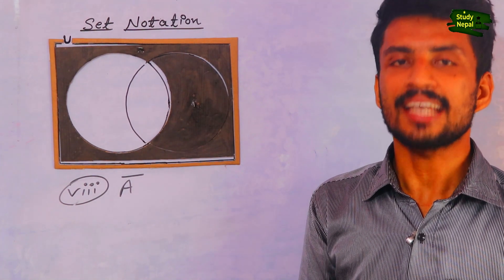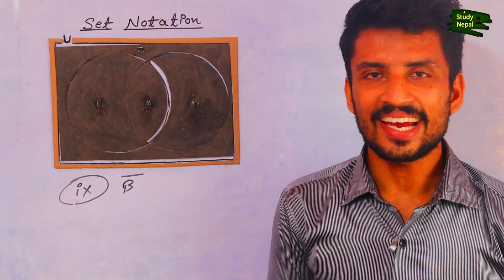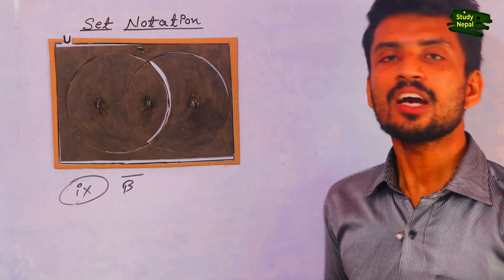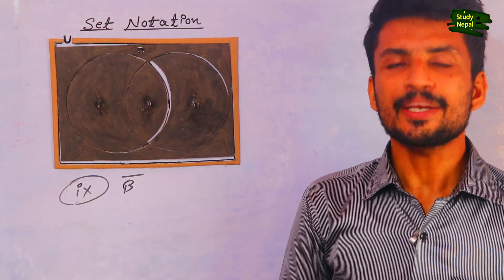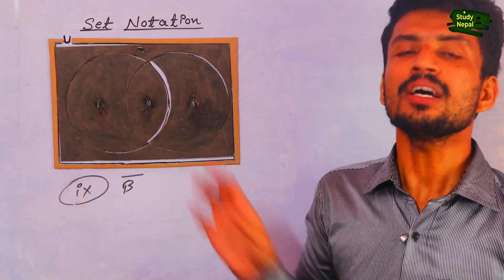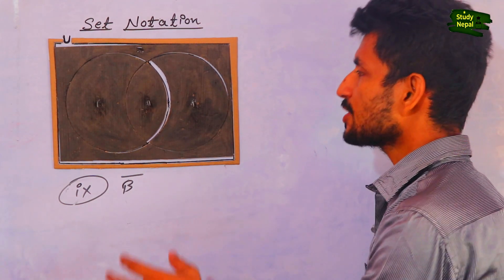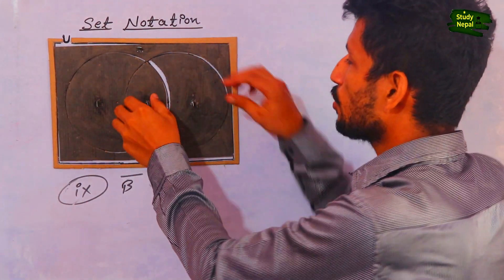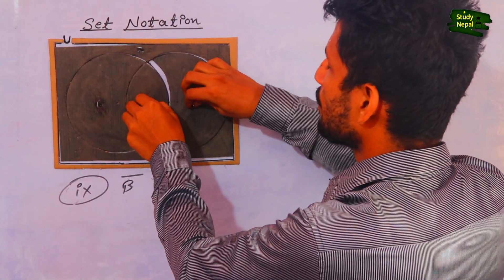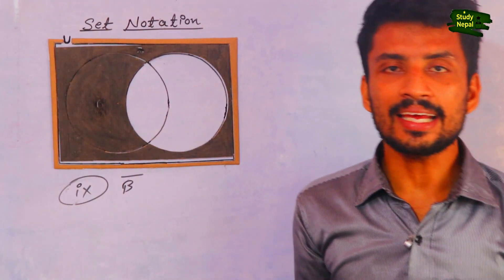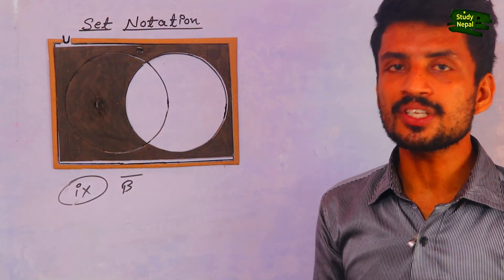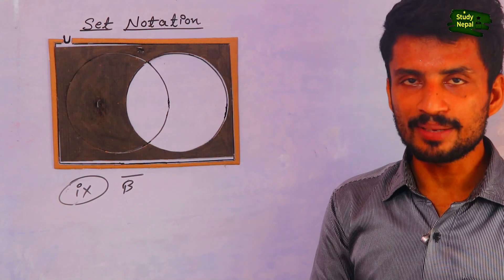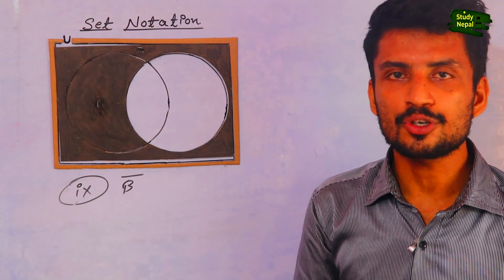Now the ninth topic is B complement. It means we have to remove B from the given Venn diagram. As you already know, this is A and this is B. We remove B, and the shaded portion which remains in this Venn diagram is the answer of B complement.